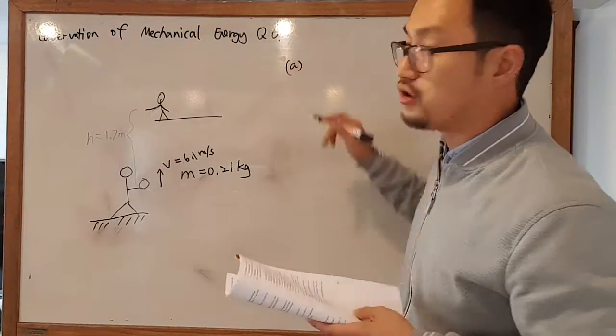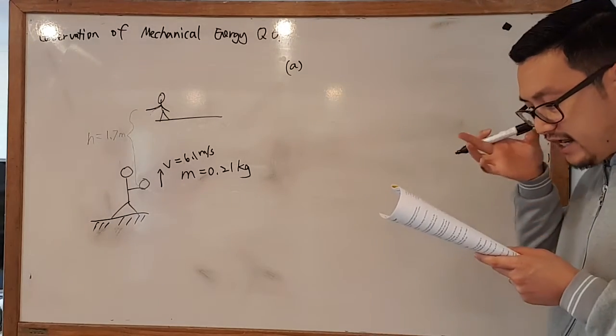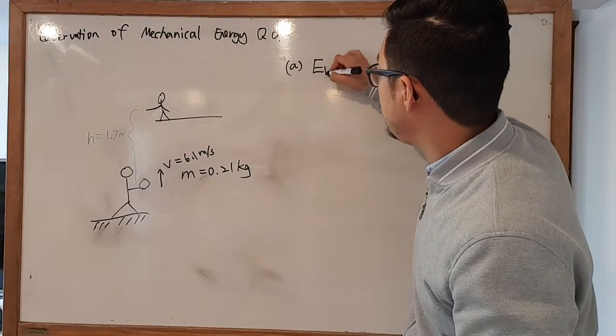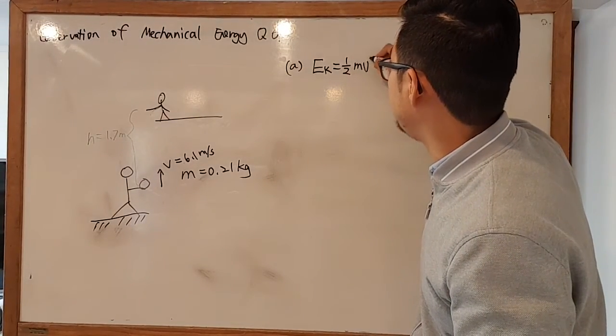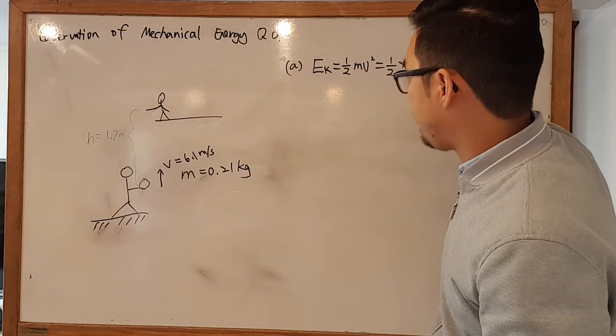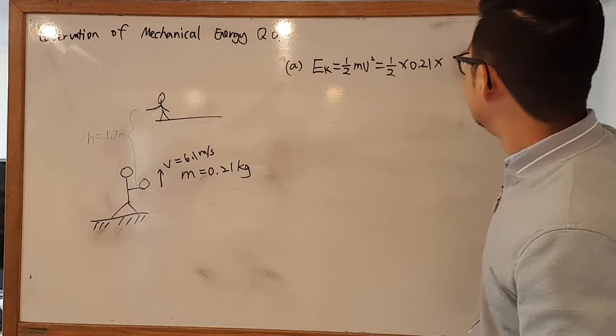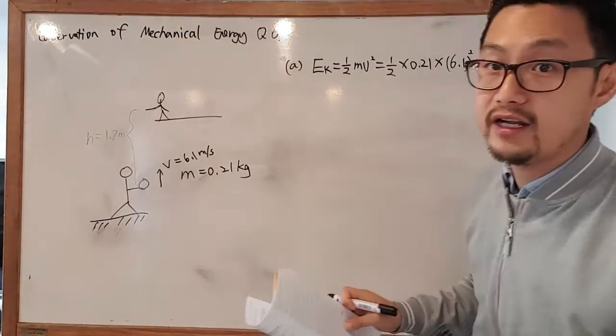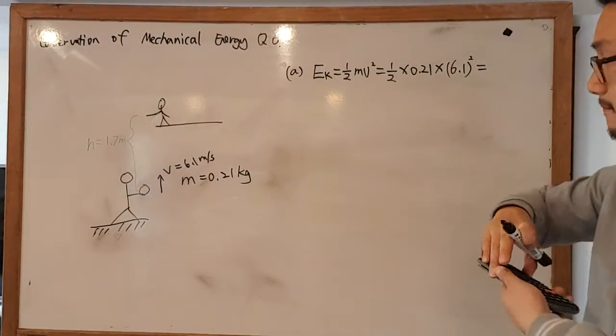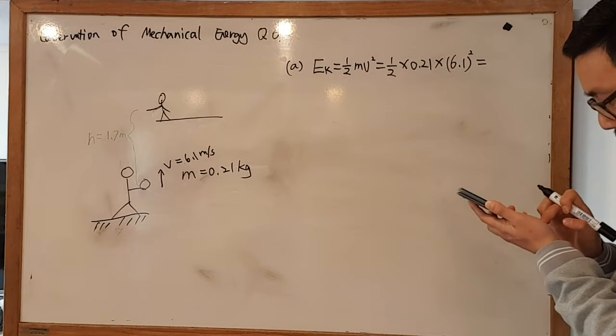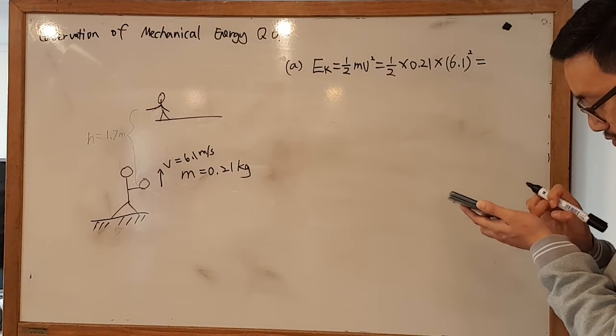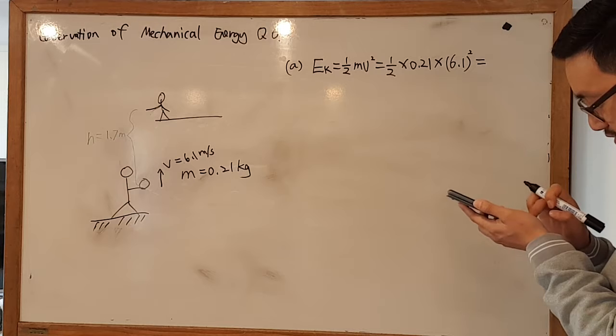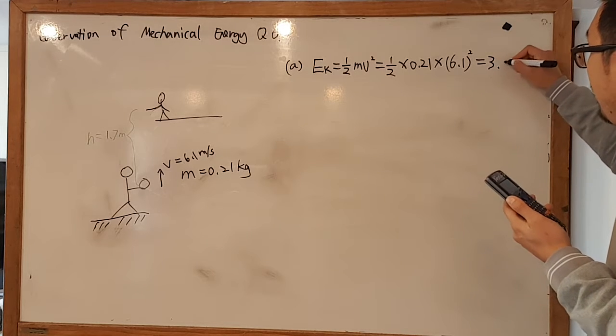Question A says calculate the kinetic energy of the ball as it leaves the girl's hand. Kinetic energy equals half mv squared. Put the numbers down: one half times mass 0.21 times 6.1 squared. Put it in the calculator and that gave me 3.92 joules.